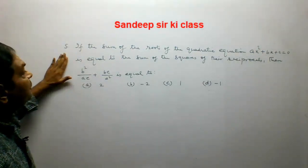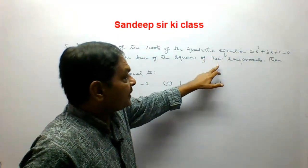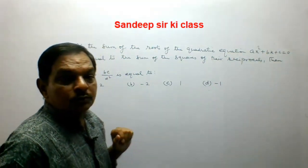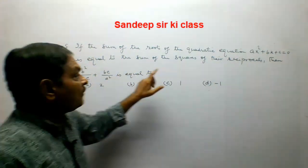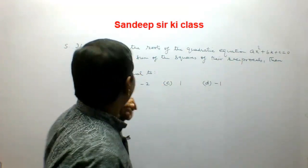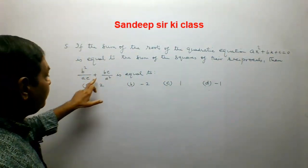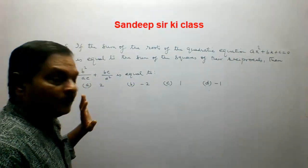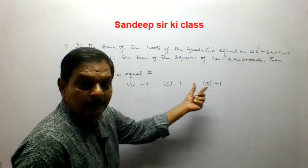Question number 5. If the sum of the roots of the quadratic equation ax² + bx + c = 0 is equal to the sum of the squares of their reciprocals, then b²/ac + bc/a² is equal to: options are 2, minus 2, 1, or minus 1.